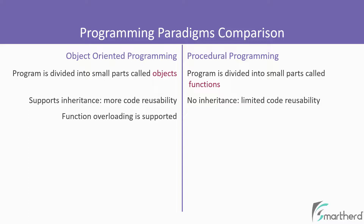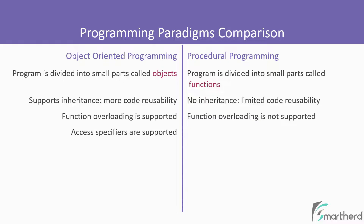Features like function overloading are supported in the OOP paradigm, but on the other side, it is not supported. In the OOP paradigm, access specifiers are supported, while on the other hand, they are not supported in procedural programming.